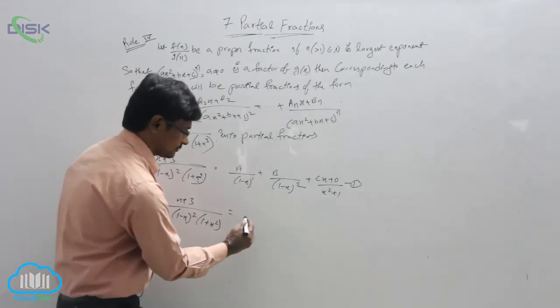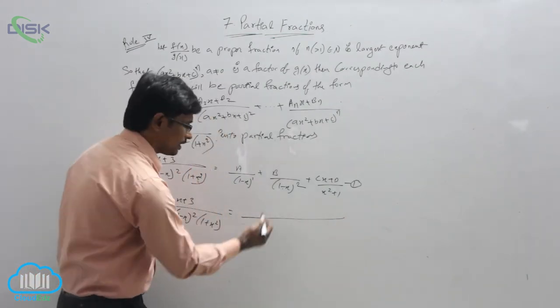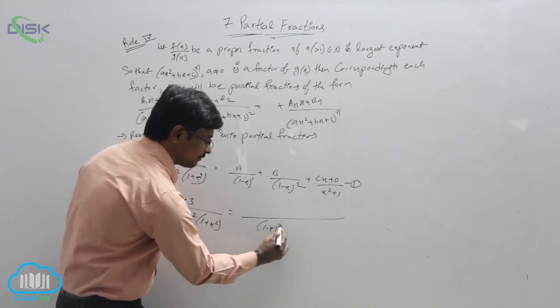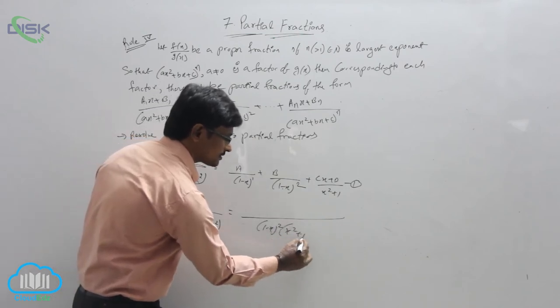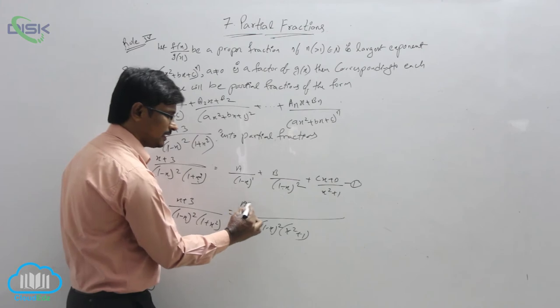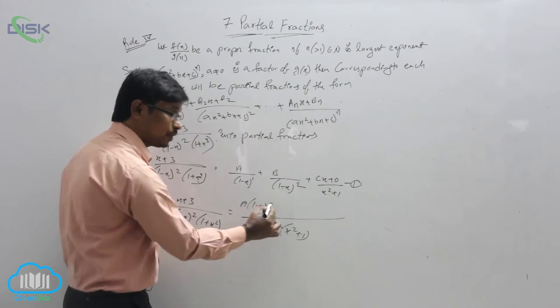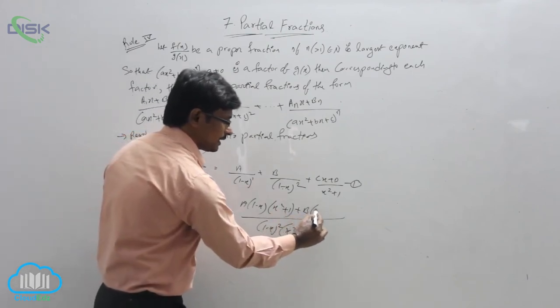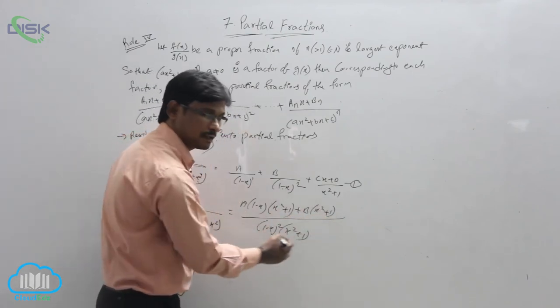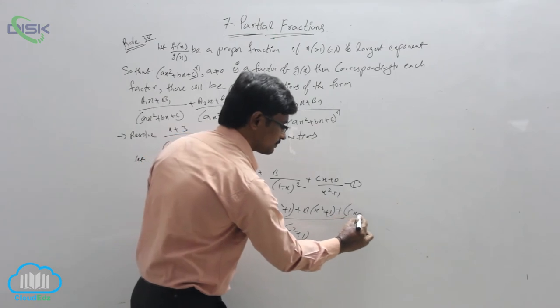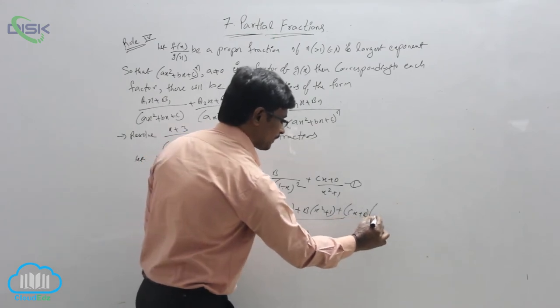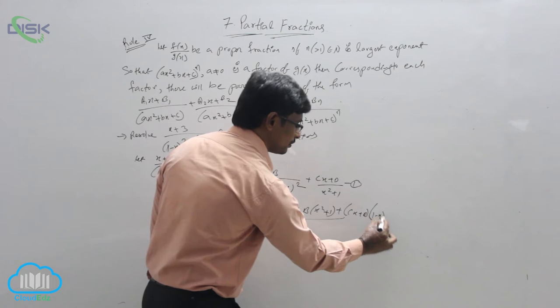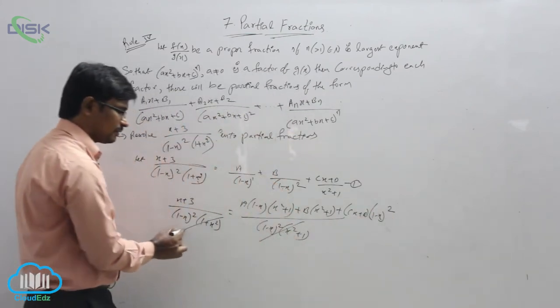Considering LHS and RHS, for RHS we can take LCM: 1 minus x whole square into x² plus 1. What we will get? A of 1 minus x into x² plus 1, plus B of x² plus 1, plus cx plus d into 1 minus x whole square. Clearly these two terms will be cancelled.